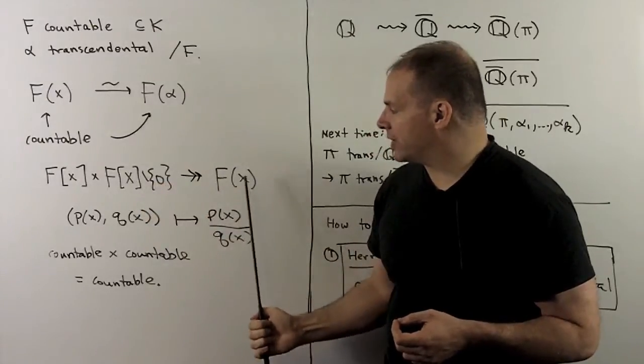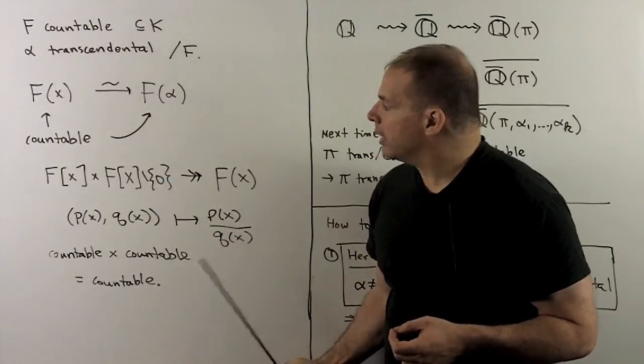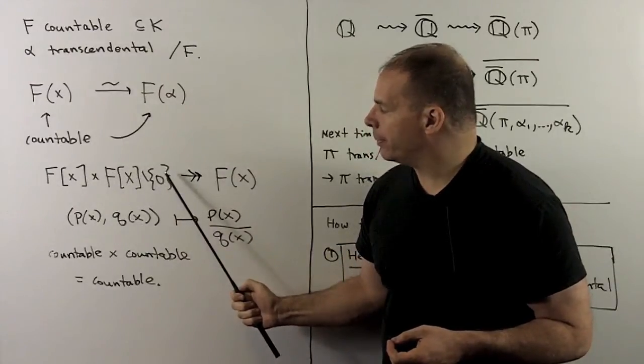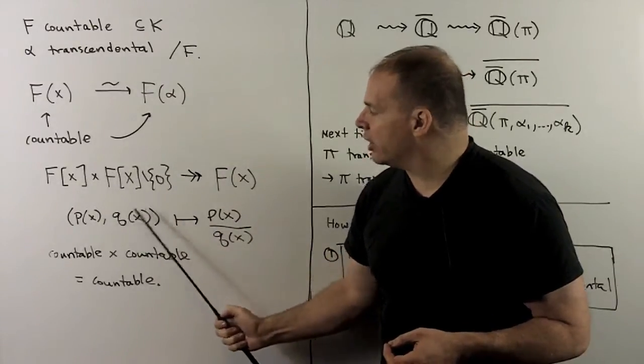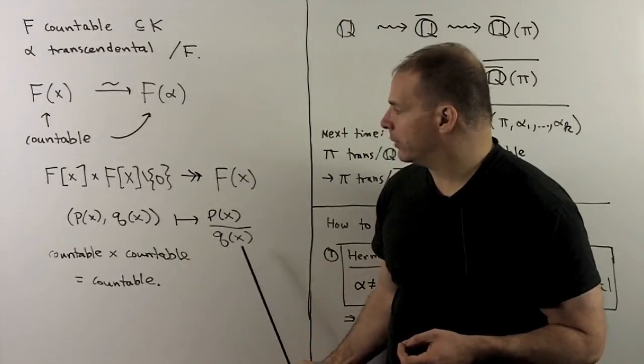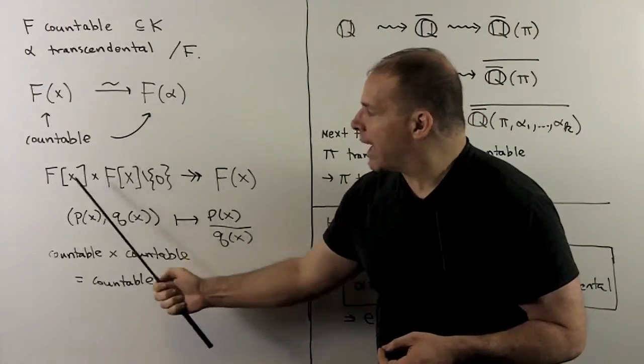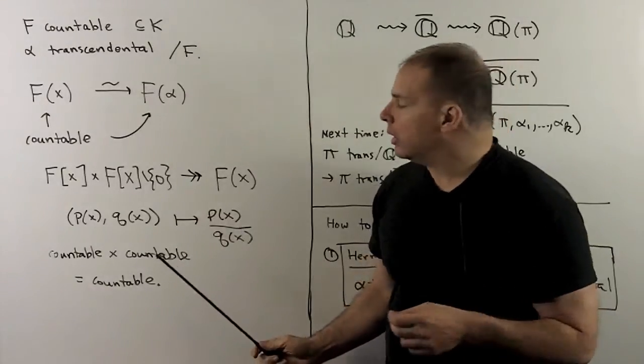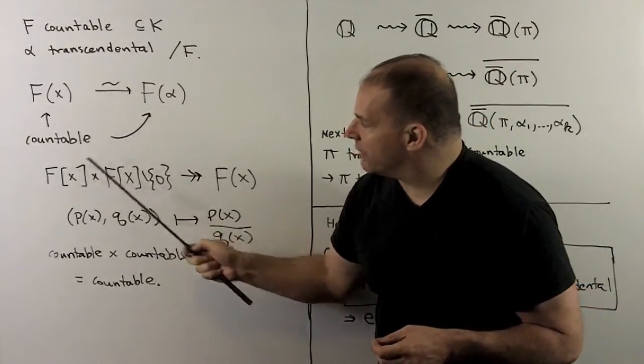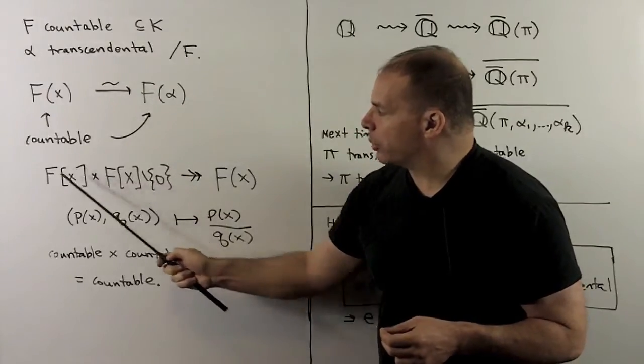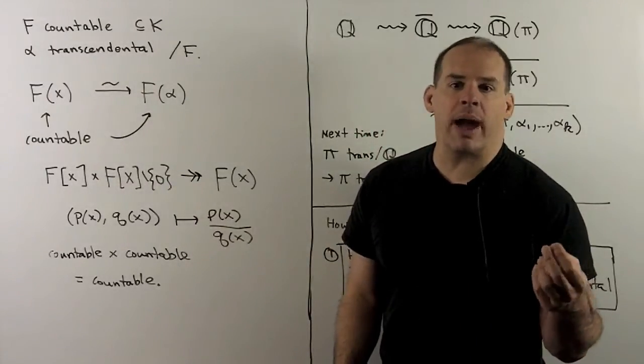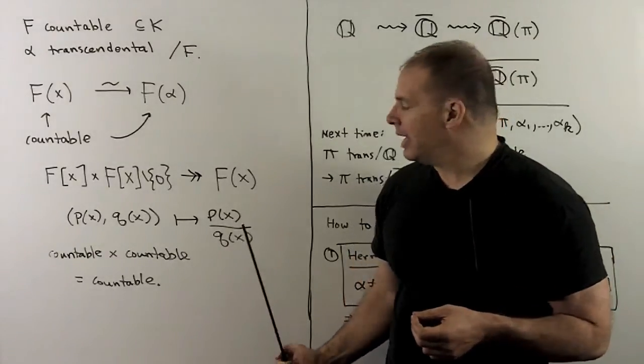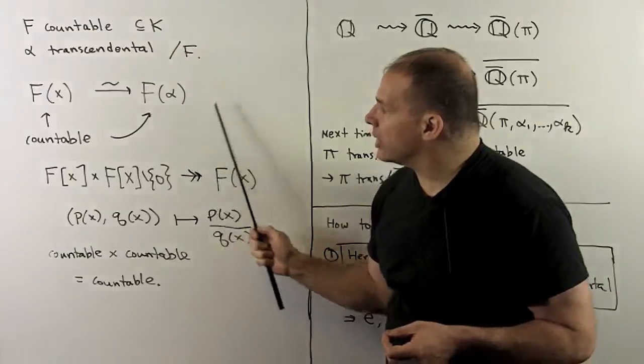Now every rational function can be written as a polynomial over a polynomial. So I have a map going from f adjoint x cross f adjoint x, throw away 0. It's going to send each pair to its ratio. Now this map is onto, but it's not one-to-one. That's not a problem. We note we've seen that each of these sets is countable. So the product is countable. And I have an onto map from a countable set, so the image is also countable. That means the subfield is also countable.